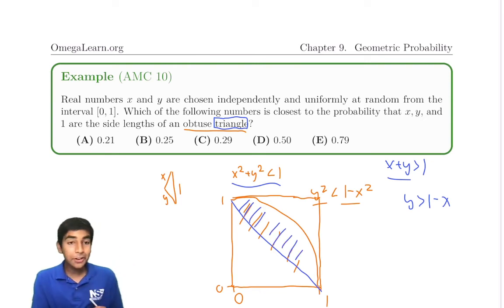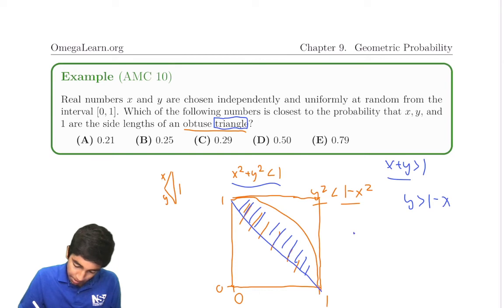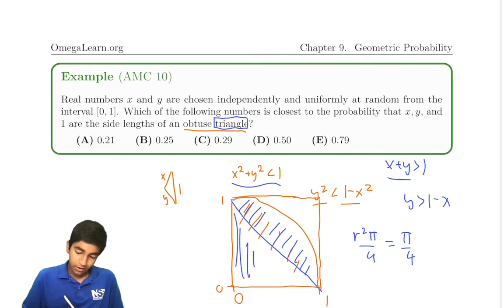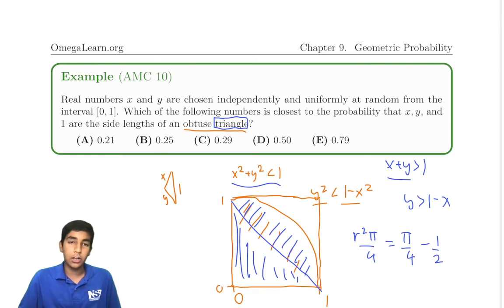So our actual area, the quarter semicircle, which is r squared pi by 4, r is 1, so just pi by 4, minus this triangle over here. 1 times 1 divided by 2 minus half. That's the area of the triangle. That does not work. And this all equal 1, 1 times 1.